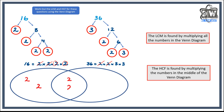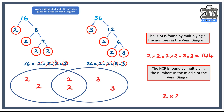I can see that two 2s are shared between both, so two 2s go in the middle. The other two 2s from 16 go on the left side, and the two 3s from 36 go on the right side. The LCM is all numbers multiplied: 2 times 2 times 2 times 2 times 3 times 3 equals 144. The highest common factor is just the middle: 2 times 2 equals 4.